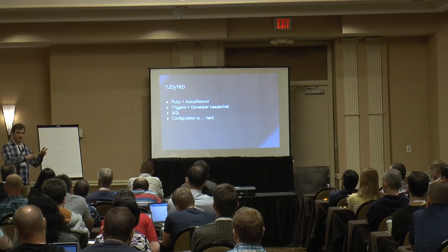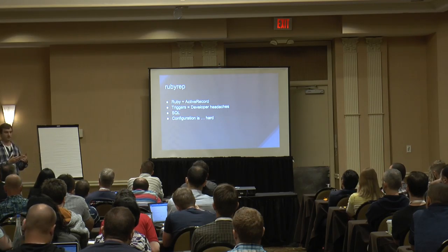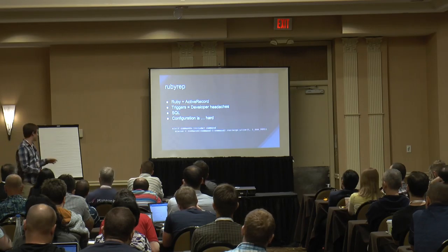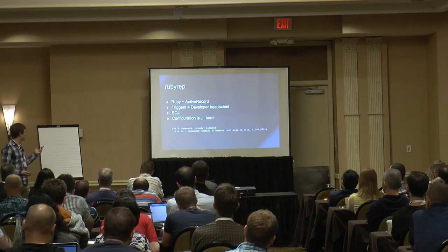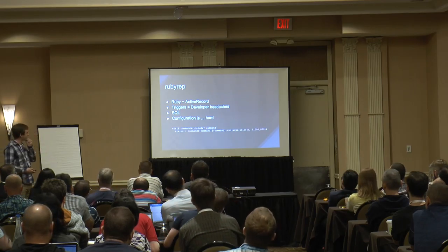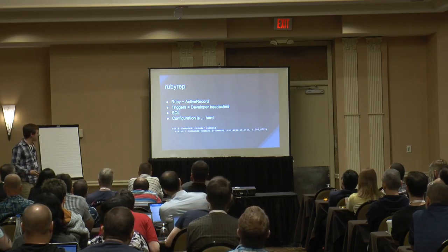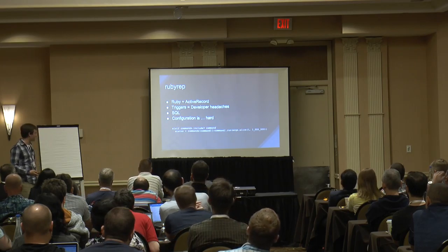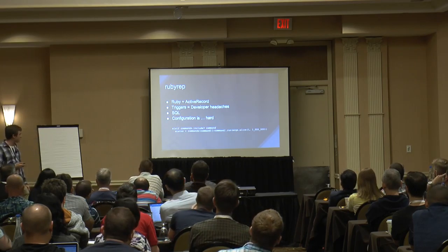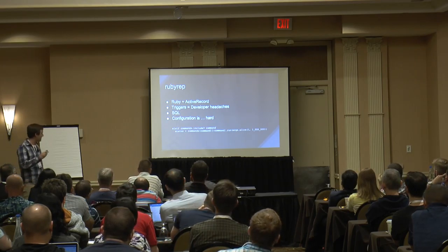When you set up Ruby Rep, everything it does is put triggers on every table you want to replicate. Whenever something happens on those tables, it drops a row into a tracking table. Then you have an external process that reads that table and writes the rows remotely. It uses SQL, which doesn't seem relevant at first — you're using a database, it makes sense — but that'll become clear later. The configuration is not easy.